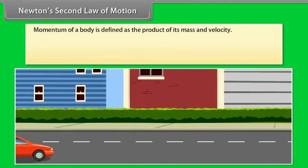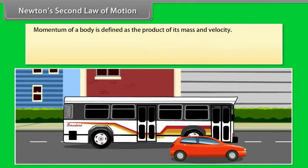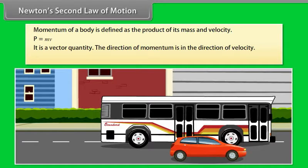Newton's Second Law of Motion: First, we will talk about momentum. Momentum of a body is defined as the product of its mass and velocity: P = mv. It is a vector quantity. The direction of momentum is in the direction of velocity. Its SI unit is kilogram metre per second.